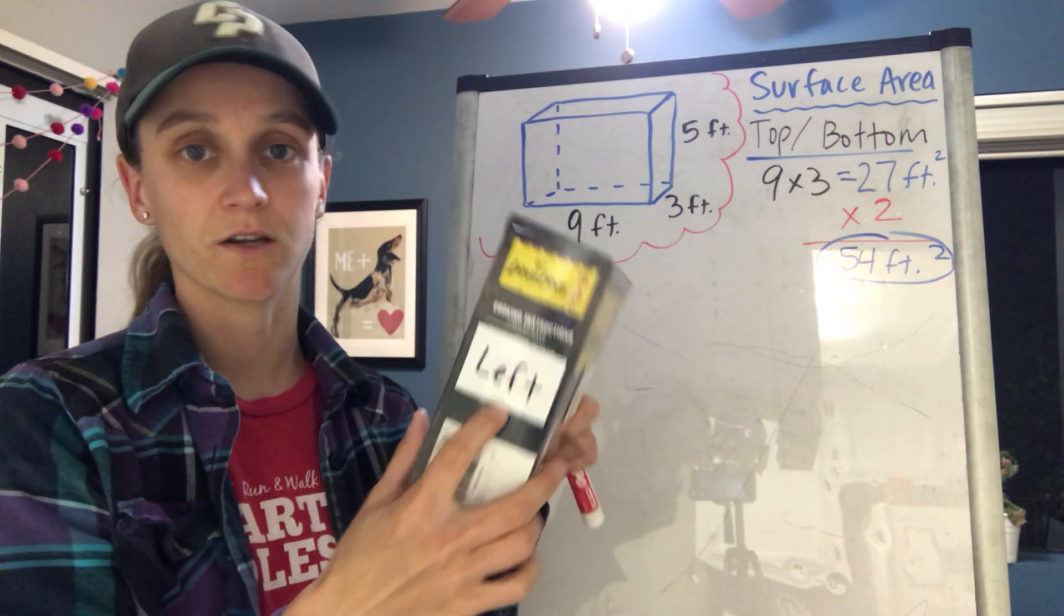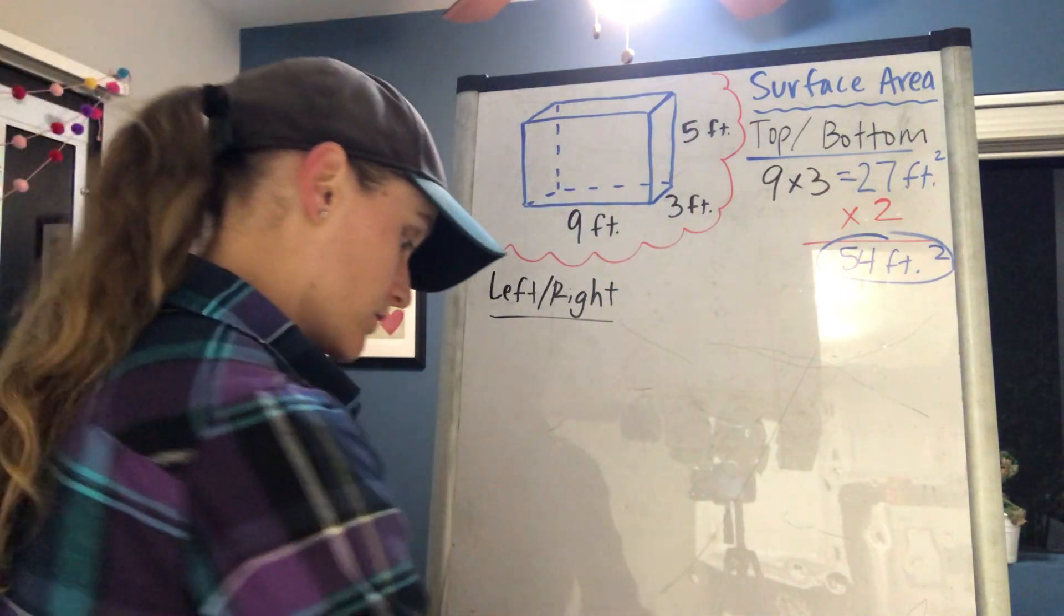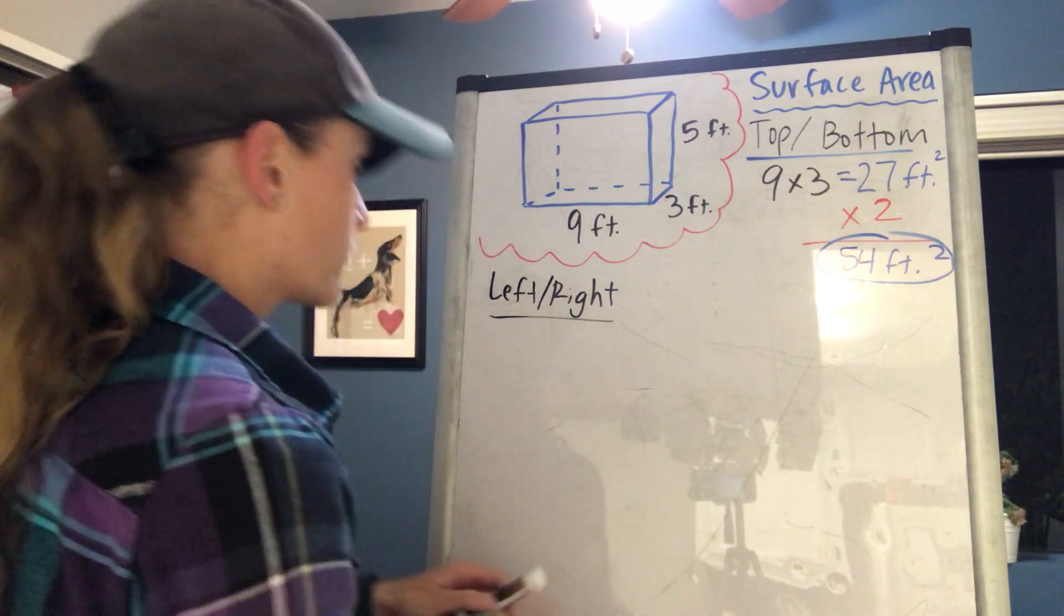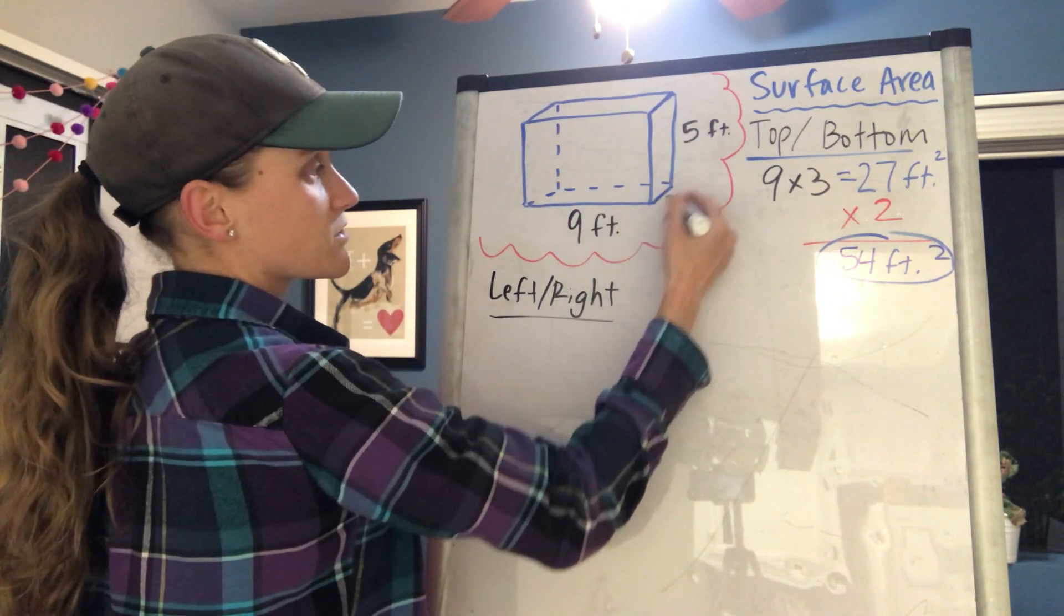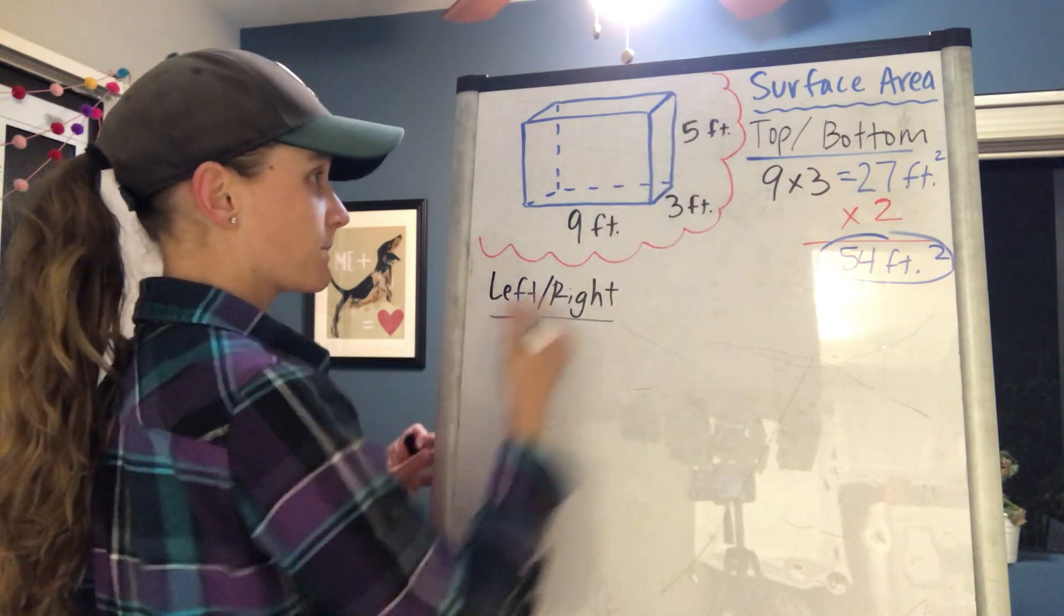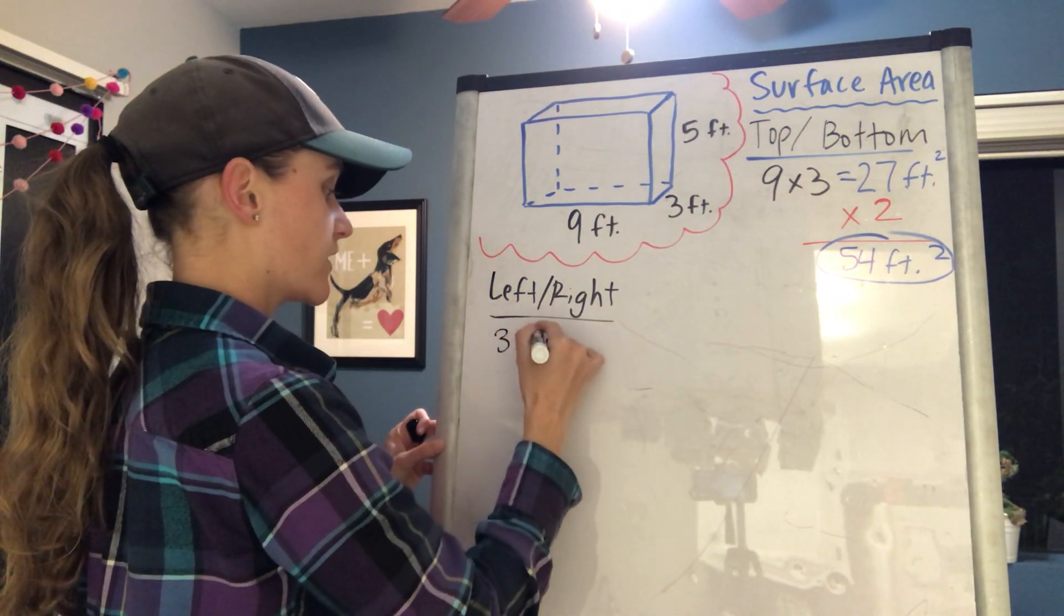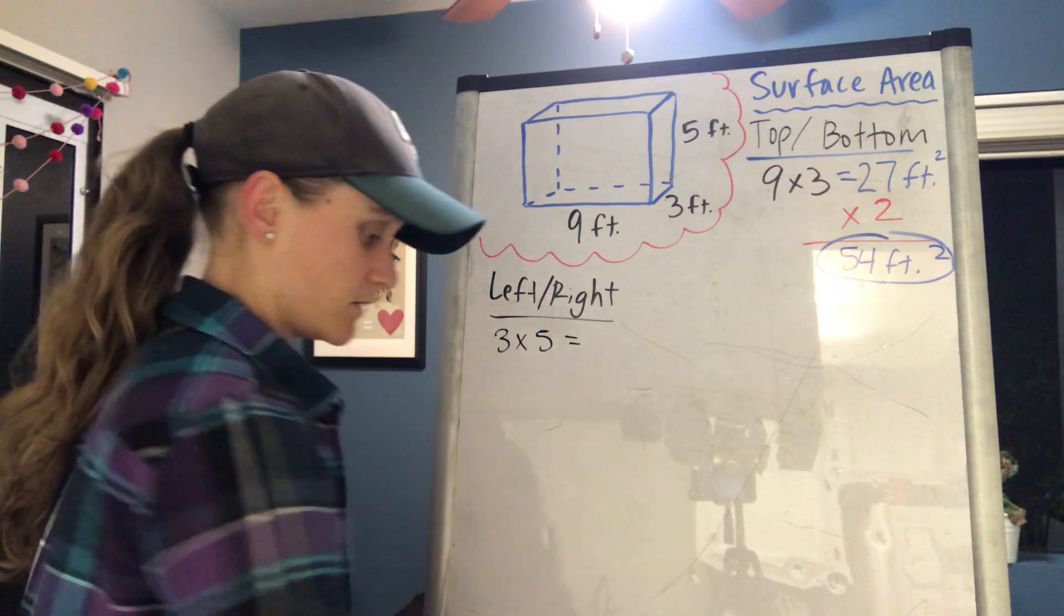So let's look at the right side here. It's easy to see. I can see that it's 3 feet by 5 feet, so I do 3 times 5 equals 15.